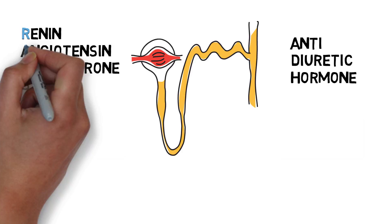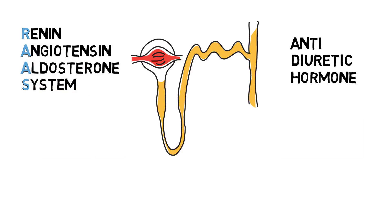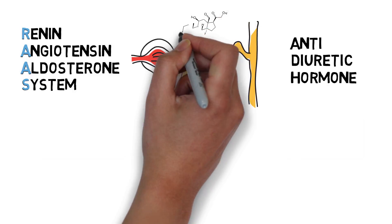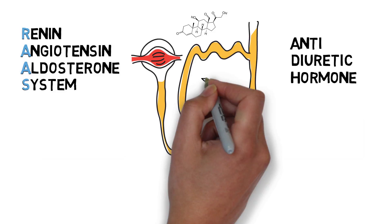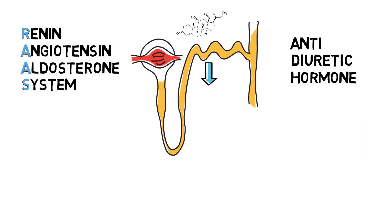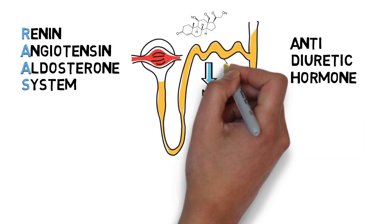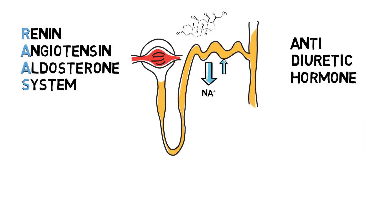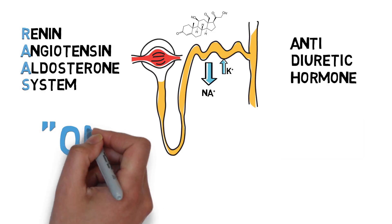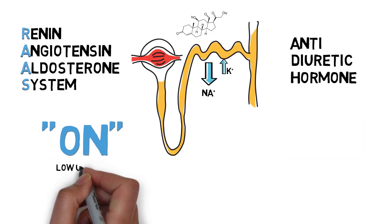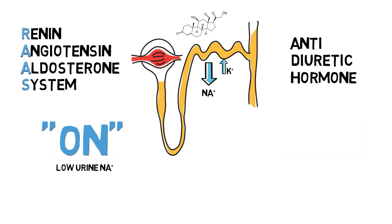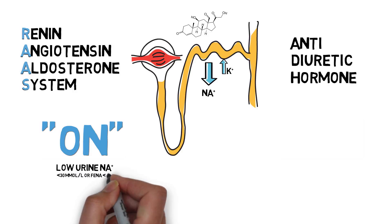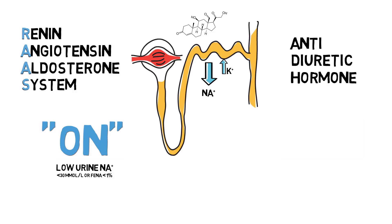The end product of the renin-angiotensin-aldosterone system, or RAS system, is aldosterone. Aldosterone is made in the adrenal gland and has as its effect the retention of sodium at the expense of potassium. When the RAS system is activated, sodium is resorbed back in the distal tubules and collecting ducts of the kidney, causing little sodium to be excreted in urine. So if your RAS system is on, the urine sodium is low — usually defined as lower than 30 millimoles per liter — but it's more accurate to calculate the fractional excretion of sodium, because the excretion of sodium and creatinine in urine is variable.